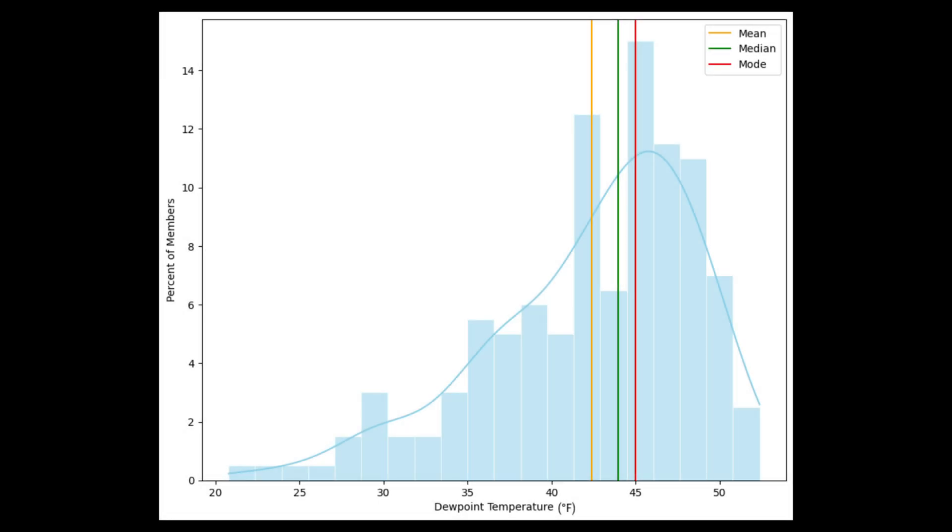When we look at skewed distributions, the measures of central tendency can help us determine how the distribution falls. On a left skewed Gaussian distribution, the mode will always be the parameter with the value that occurs most frequently. The median will then come next as you move left along the distribution with the mean further left than the median.